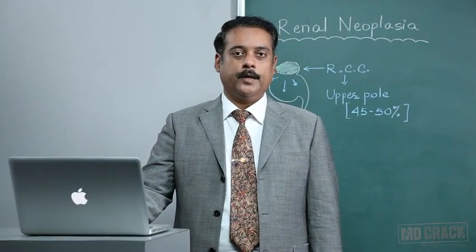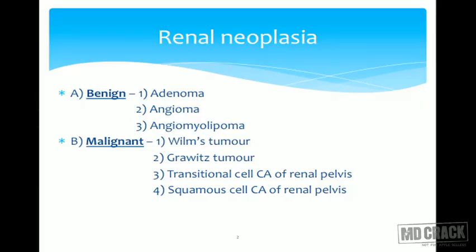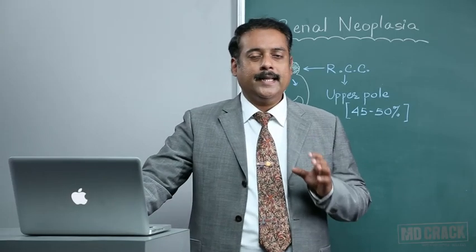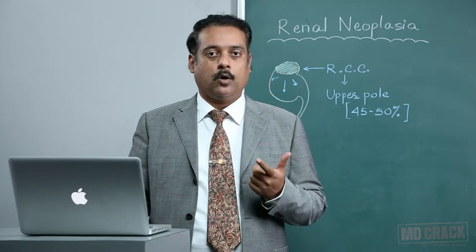Welcome students! We are going to look into the interesting topic of renal neoplasia. Renal neoplasia can be classified into two broad categories: benign versus malignant. Benign lesions include renal adenoma, renal angioma, and renal angiomyolipoma. Malignant neoplastic lesions include Wilms Tumor, Grawitz Tumor, Transitional Cell Carcinoma of the renal pelvis, and Squamous Cell Carcinoma of the renal pelvis. We will mainly discuss Wilms Tumor and Grawitz Tumor or RCC.